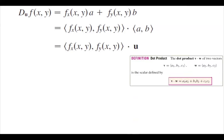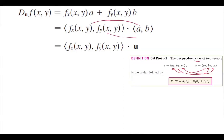The dot product between two vectors v and w is denoted v·w. If you have the components of each vector, you multiply the components respectively and then add them all together — that is how we define the dot product. So the partial derivative of f with respect to x times a, plus the partial derivative of f with respect to y times b, is the definition of the directional derivative. But this is nothing but the dot product.